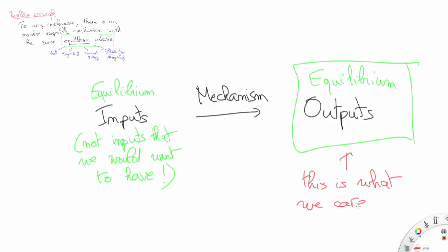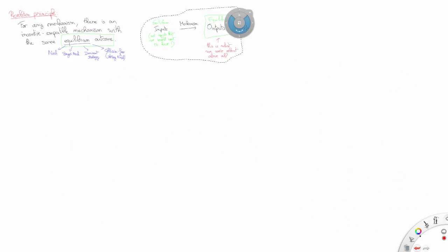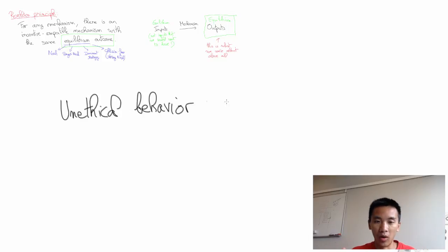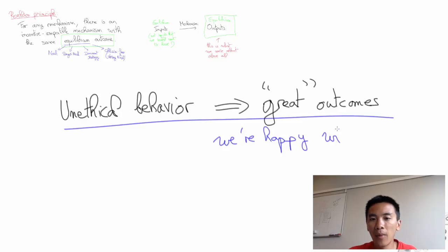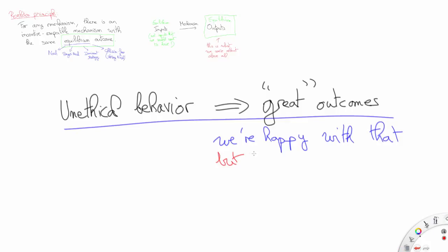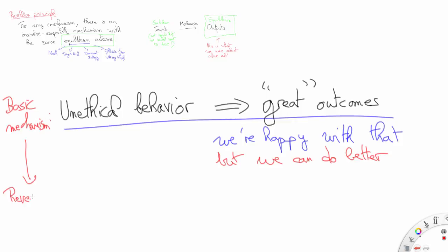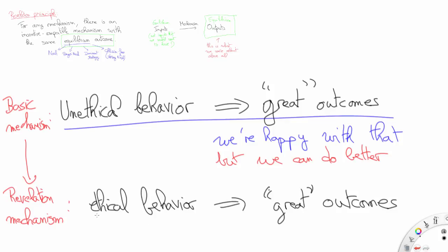So it might be tempting to think that all we need to care about are the equilibrium outcomes, and whether they were obtained through some unethical behavior may not be relevant to us after all. Now the beauty of the revelation principle is that it claims we don't have to settle with unethical behaviors. Whenever unethical behaviors lead to some positive equilibrium outcomes, the revelation principle gives us a constructive way to modify the rules of interactions so as to obtain those positive equilibrium outcomes while enforcing truthful behavior at equilibrium.